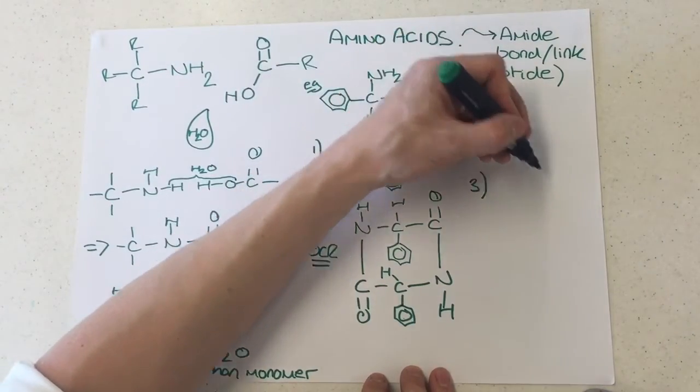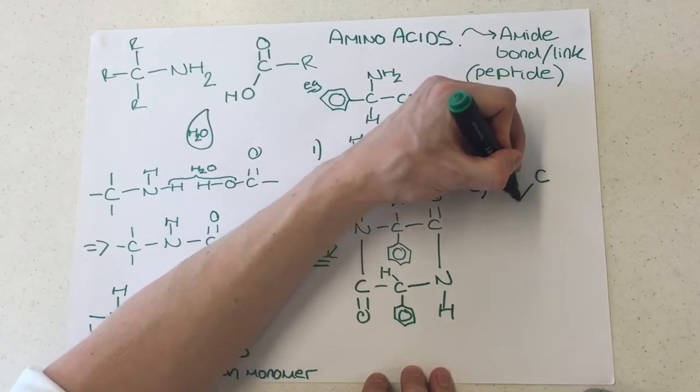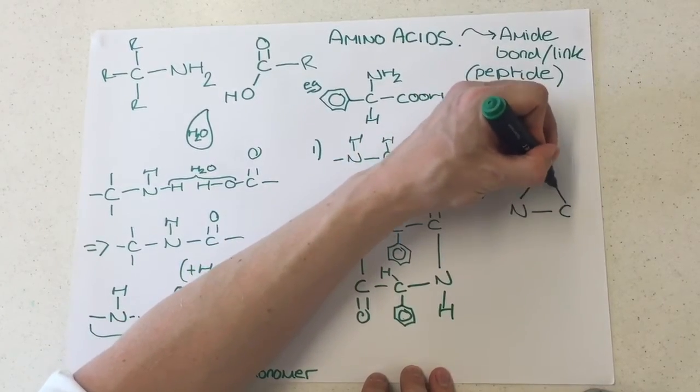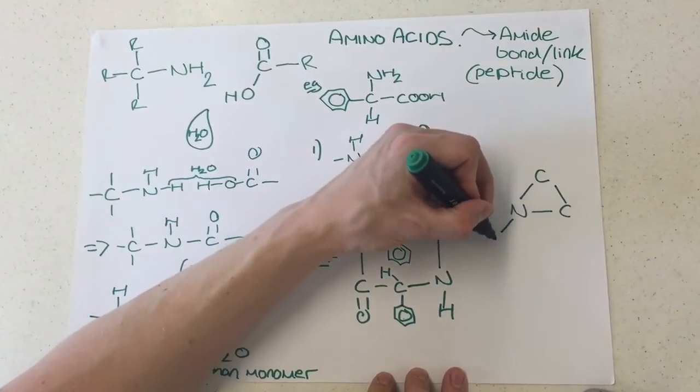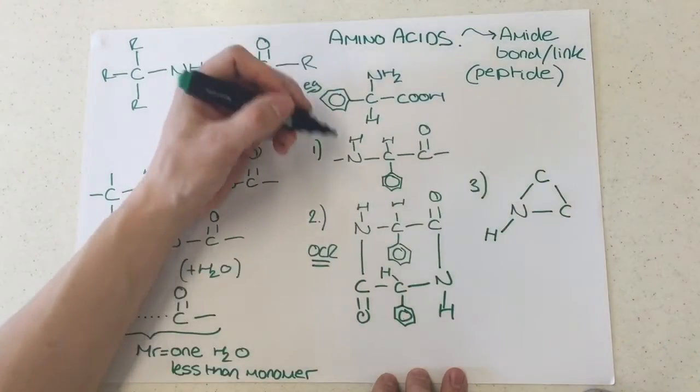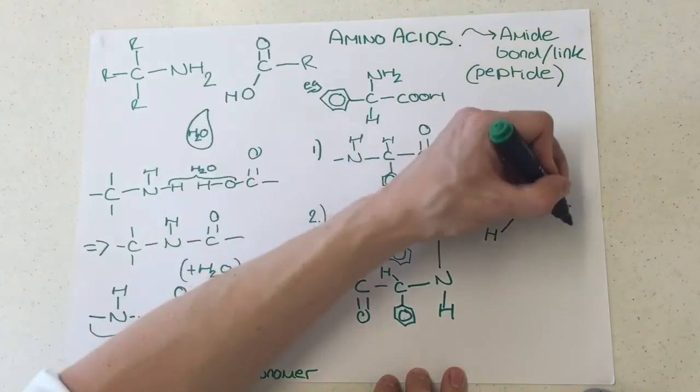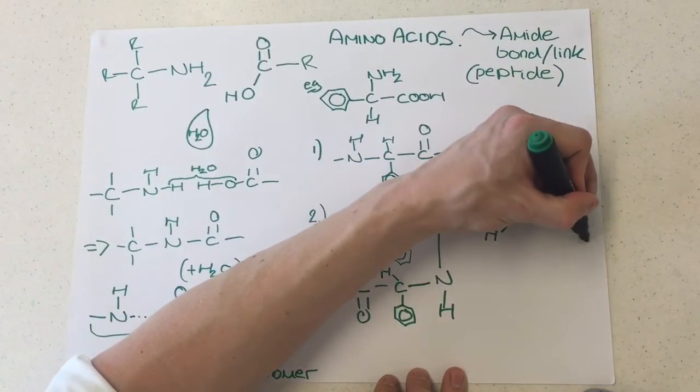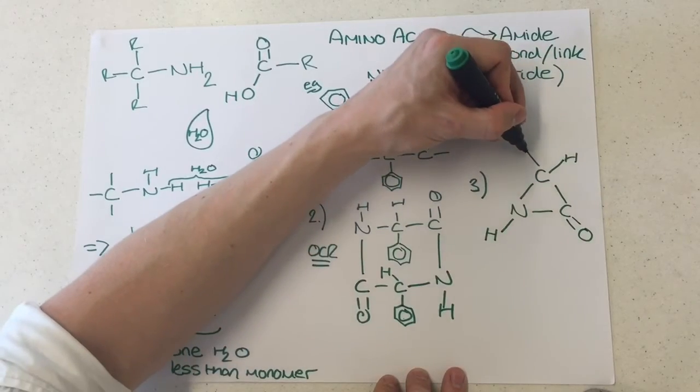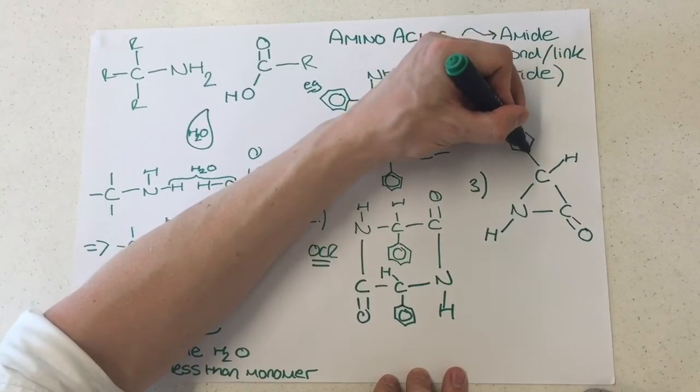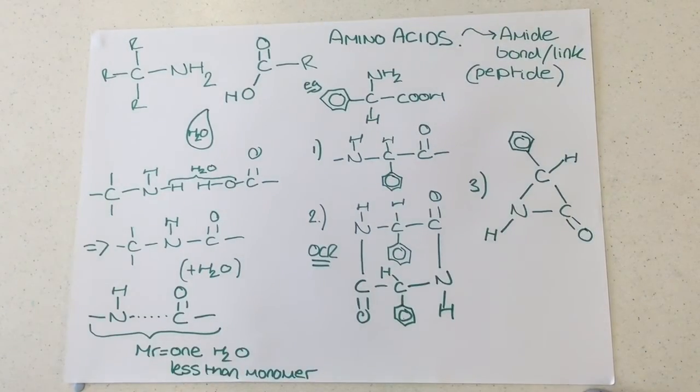And what you actually end up with, which is a bit weird to look at at first, is you end up with the three atoms connected like so. This nitrogen still has the H, just like it's done every single time. This carbon still has the C double bond O, and then here is the middle part of the chain.